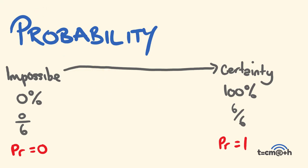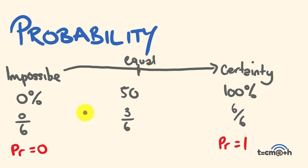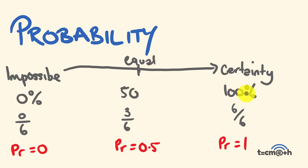Halfway in between, we have a 50% chance — an equal chance of something occurring. For example, rolling an even number on a dice: the probability is 3 out of 6, which is 0.5. As we go from equal chance toward impossible, things become increasingly unlikely. As we go toward certainty, things become increasingly likely. This is important because, knowing that total probabilities sum to 1 is really handy for working things out later on.